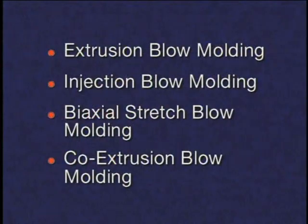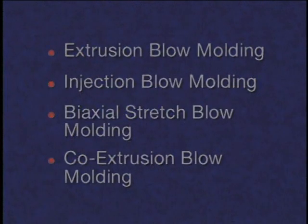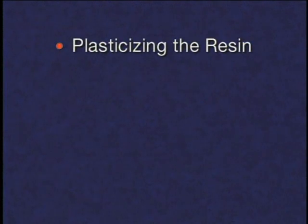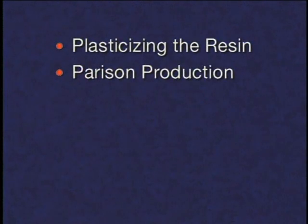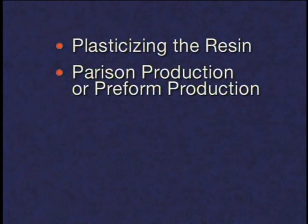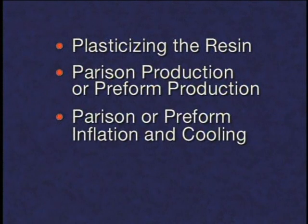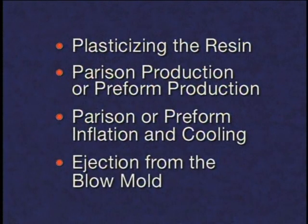These blow molding processes all share four common stages: plasticizing or melting the resin; parison production when referring to most blow molding operations, or preform production when referring to biaxial stretch blow molding; parison or preform inflation and cooling in the blow mold; and ejection from the blow mold.